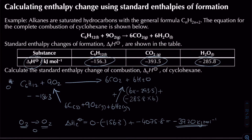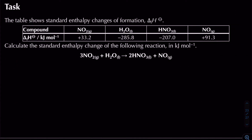Now for the next example using more enthalpy change of formation data: we need to calculate the standard enthalpy change of formation in kJ/mol. I'll draw part of a cycle using the equation itself. The elements in their standard states are: 1.5 mol N₂(g), 1 mol H₂(g), and 3.5 mol O₂(g).